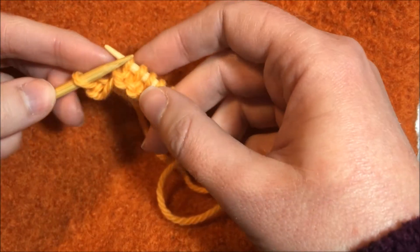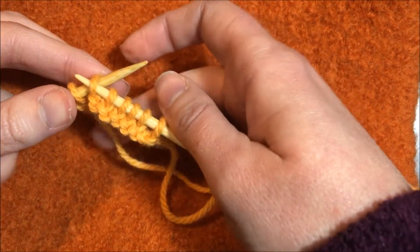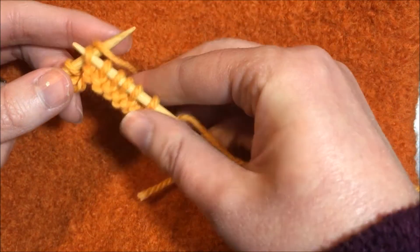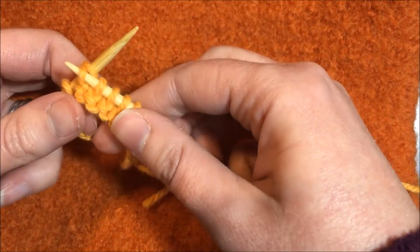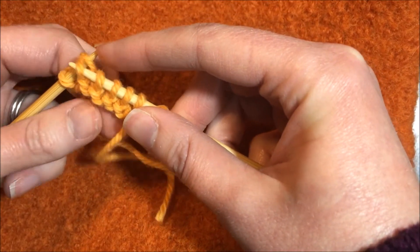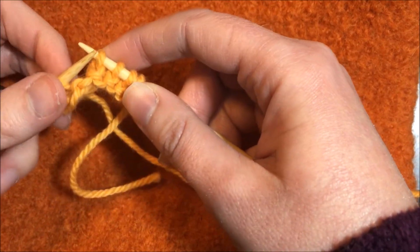So you have one stitch on your left hand needle and the rest of them are on the right. So let's do that again. So you go through the back loop, come up across the top counterclockwise, bring the new stitch, and take the old stitch off.